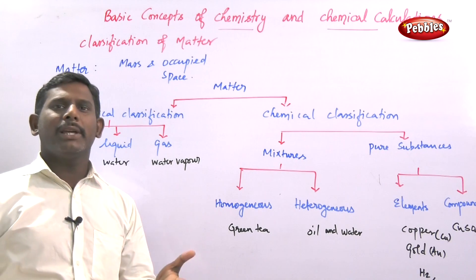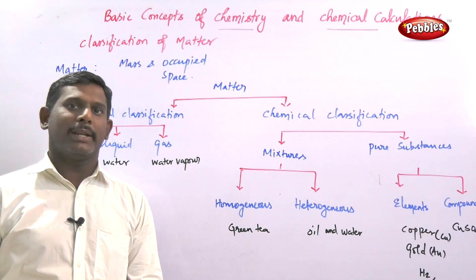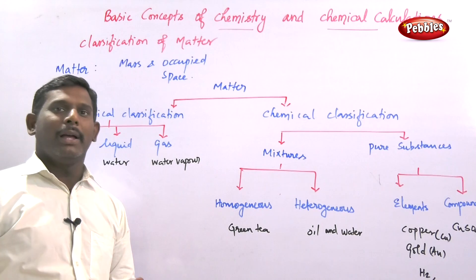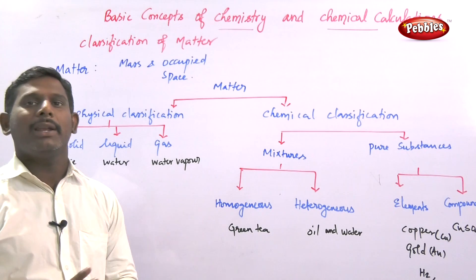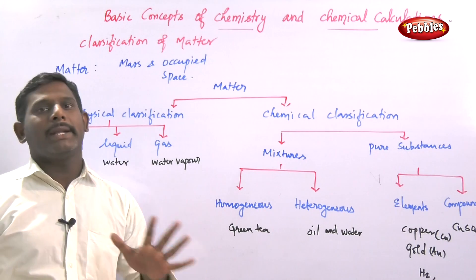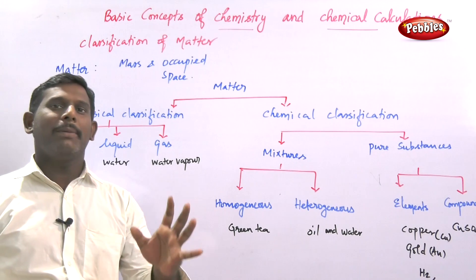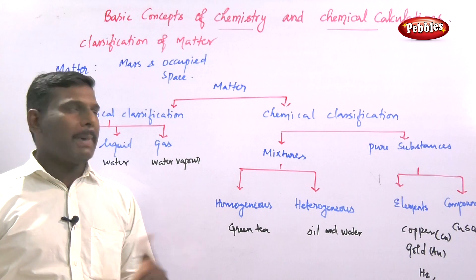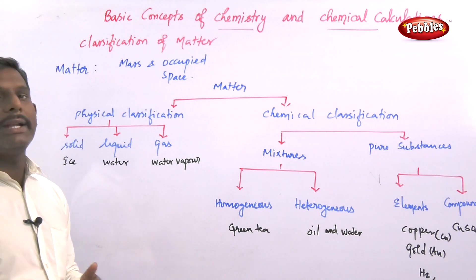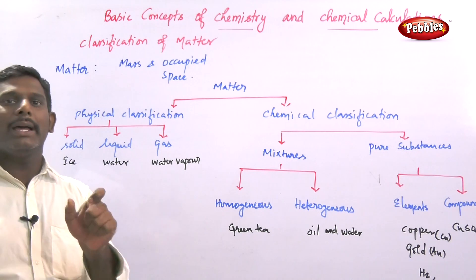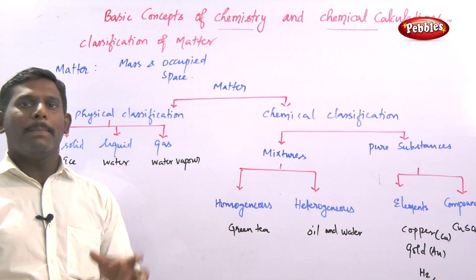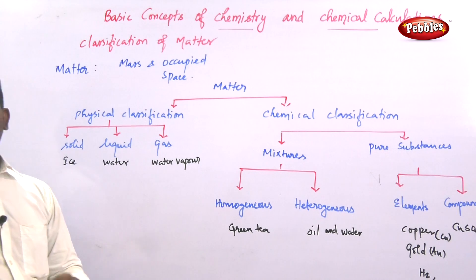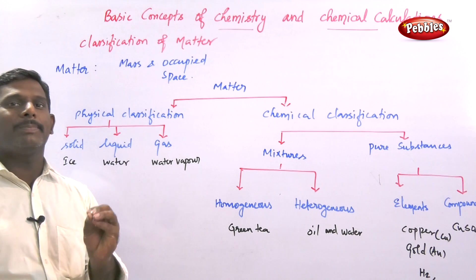What are these objects made up of? What kind of material? All these objects are made up of matter. Matter is anything that has mass and occupies space.